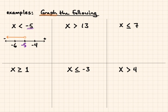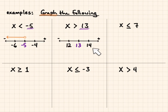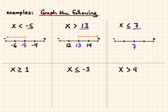Let's try x is less than or equal to 7. I'm going to put my value of interest, 7, in the center, with the greater value to the right and the lesser value to the left. Because it can be equal to, I'm going to fill in that dot. Since x is less than or equal to 7, I draw an arrow towards the negative direction.